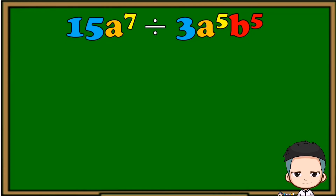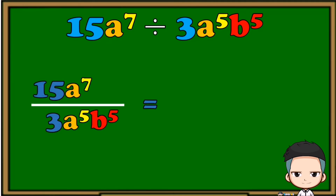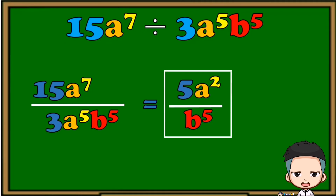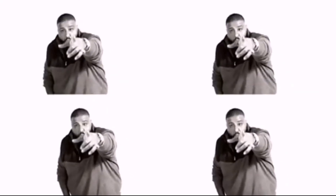This next example is a combination of division of polynomials with the same variables and different variables. First, put them in fraction form, then divide their numerical coefficients. Since these polynomials have common variables, we follow the process for same variables: copy variable a and subtract the exponents, and copy variable b together with its exponents. The final answer is 5a squared over b raised to 5.